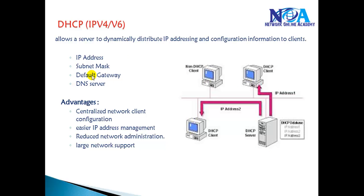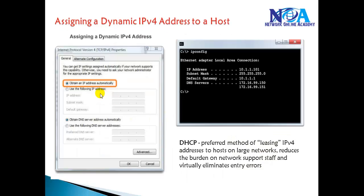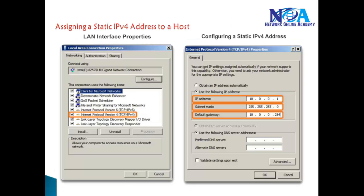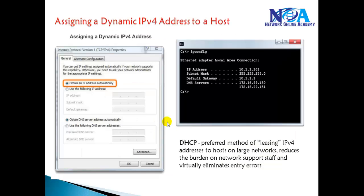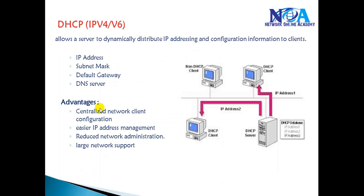The main advantage is we don't need to go to each and every device to assign IP addresses. On the computers, we simply select the option 'Obtain IP address automatically,' and it will automatically use the DHCP service to get the IP address from the DHCP server. While we can configure IP addresses manually, in most big networks we prefer to get them automatically from the DHCP server.